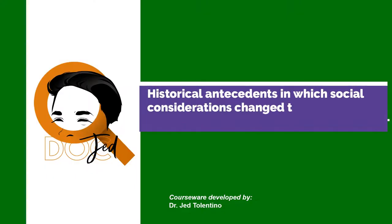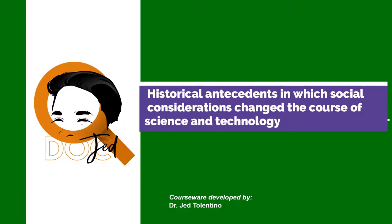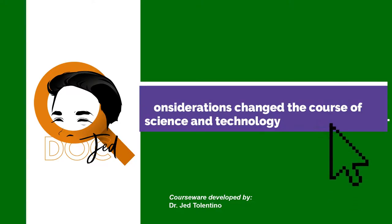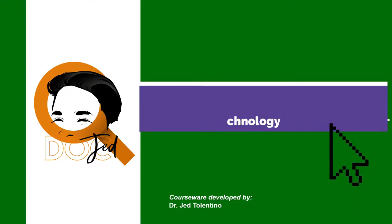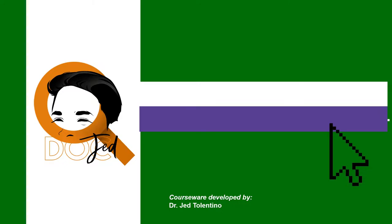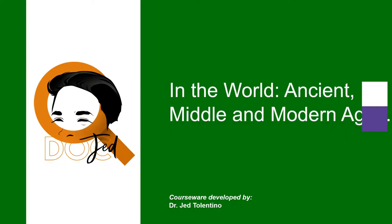Hello, good day. Our topic for today is historical antecedents in which social considerations changed the course of science and technology — first, in the world: ancient, middle, and modern ages.